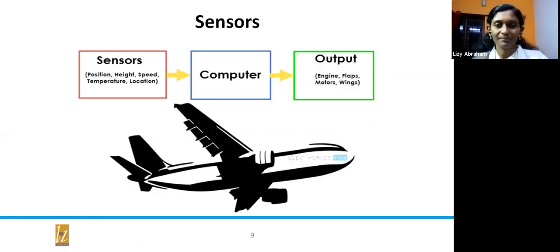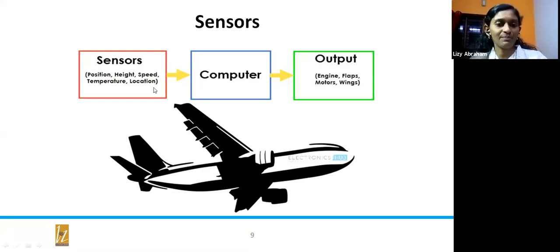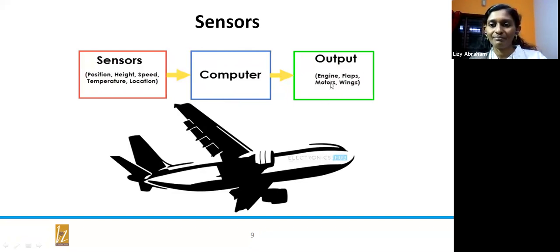For a flight, position sensors, height sensors, and speed sensors provide voltage or digital values of position, height, speed, temperature, and location. The algorithm coded in your computer converts these signals into exact SI unit output values, which then control the engine speed, motor rotation, flaps, and wings.